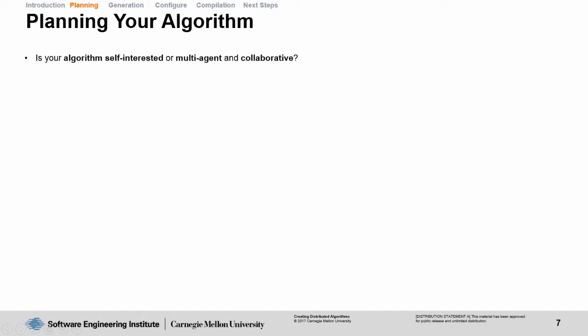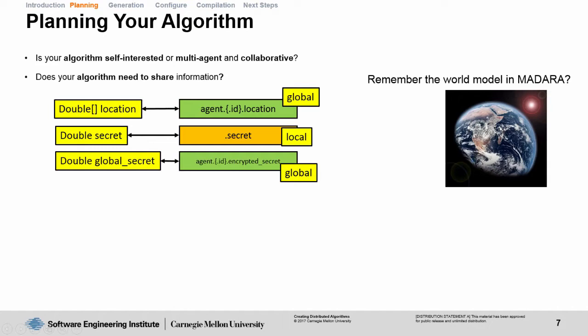Remember that world model in MADARA? MADARA gives us a way to keep local information or to share it globally. The way it does this is with a period. If your variable has a period in front of it, that means to keep it local, to not share it with anyone. You can see we've come up with an agent location to share with everyone, and an encrypted secret we're going to share globally. Since it's encrypted, you can share it with anyone, but they'll need their own private key to decrypt it.